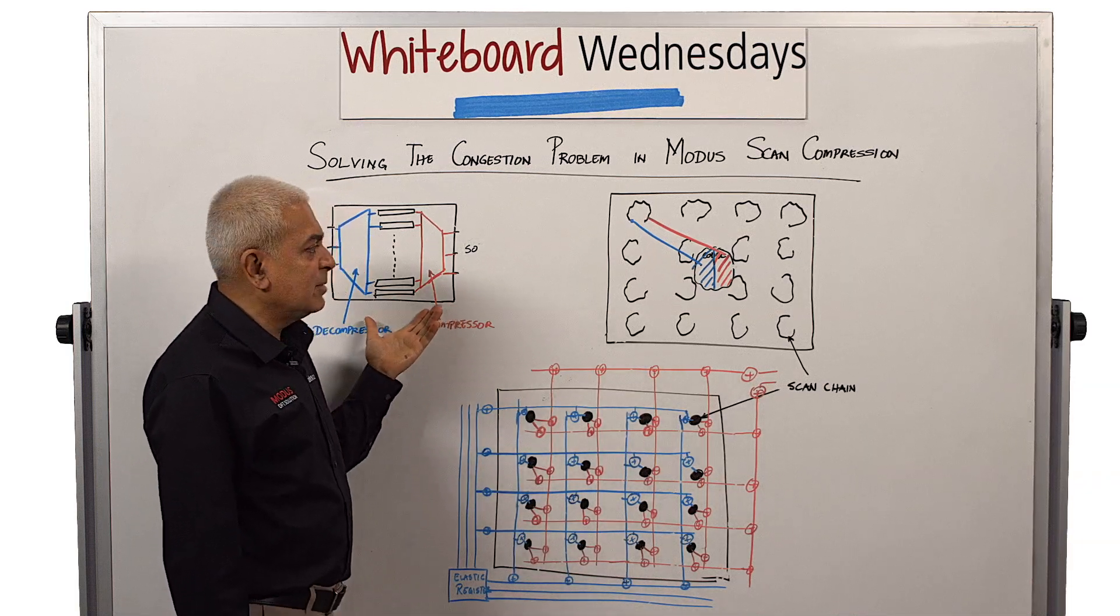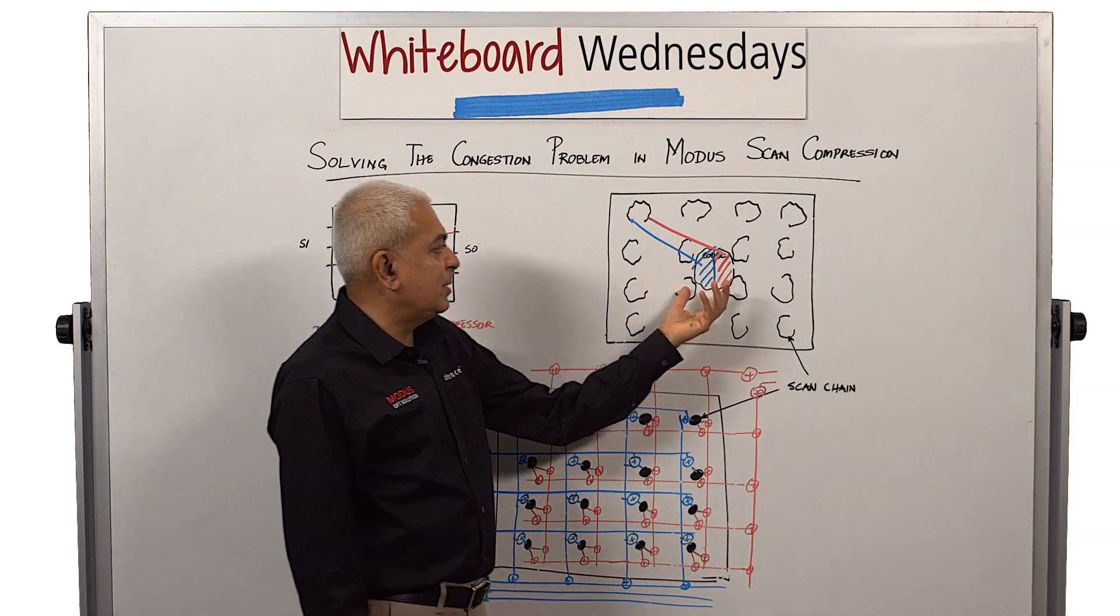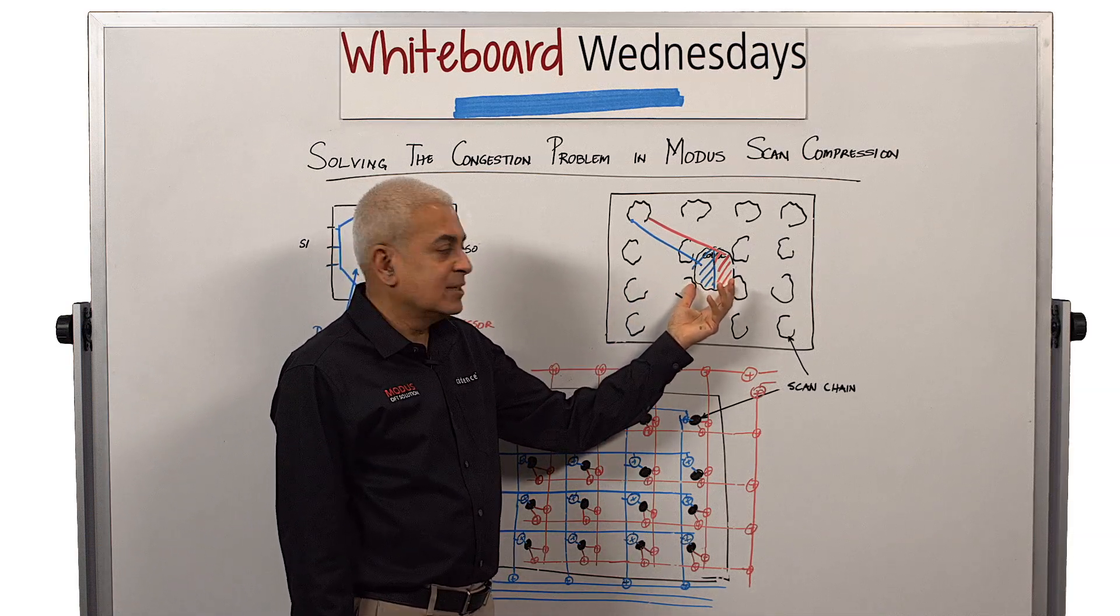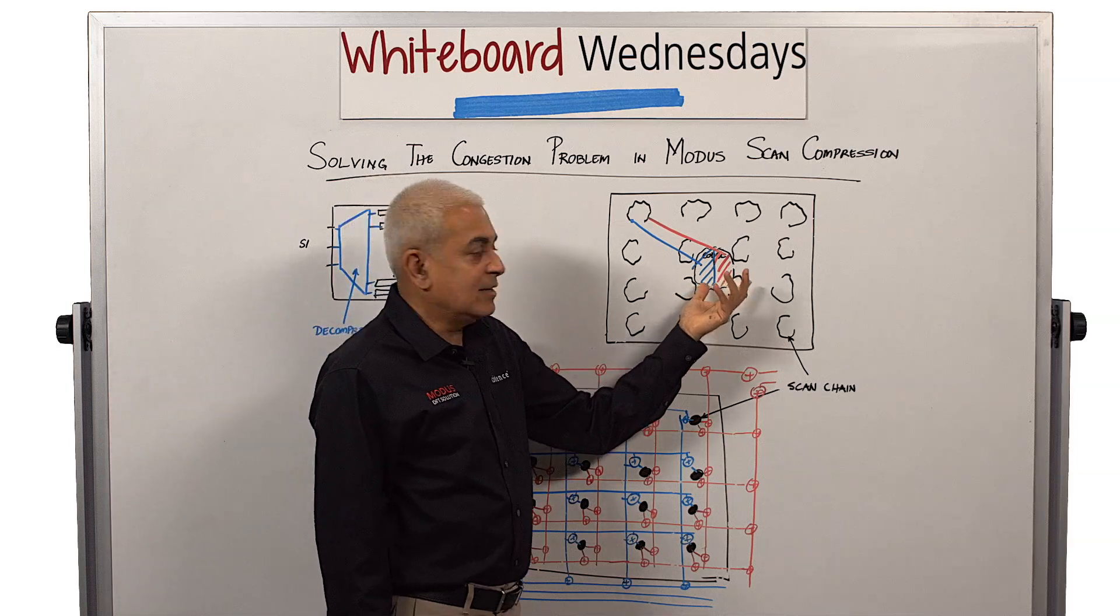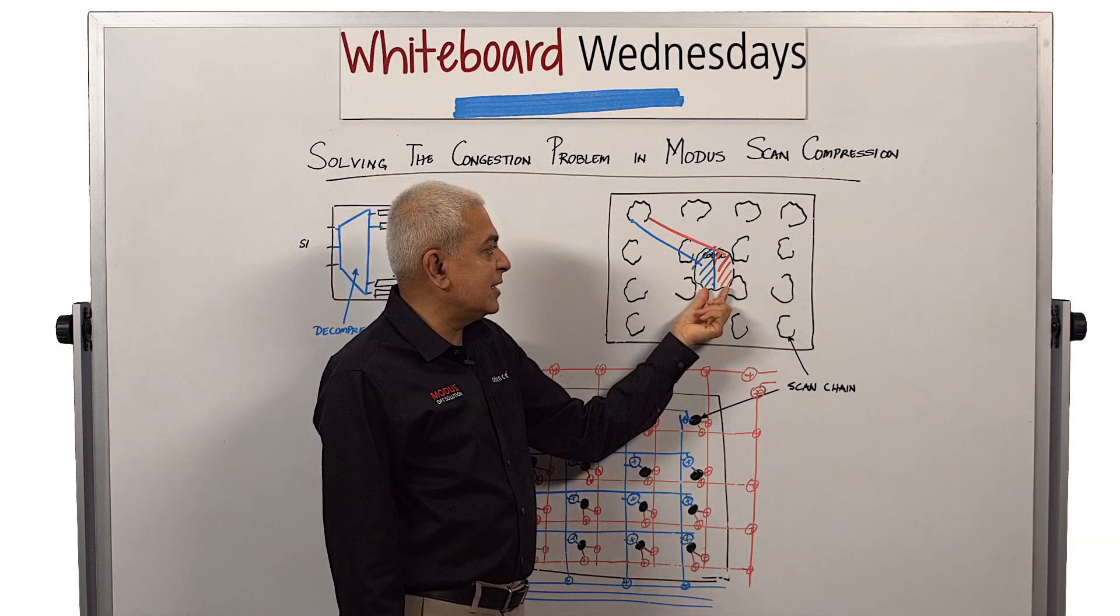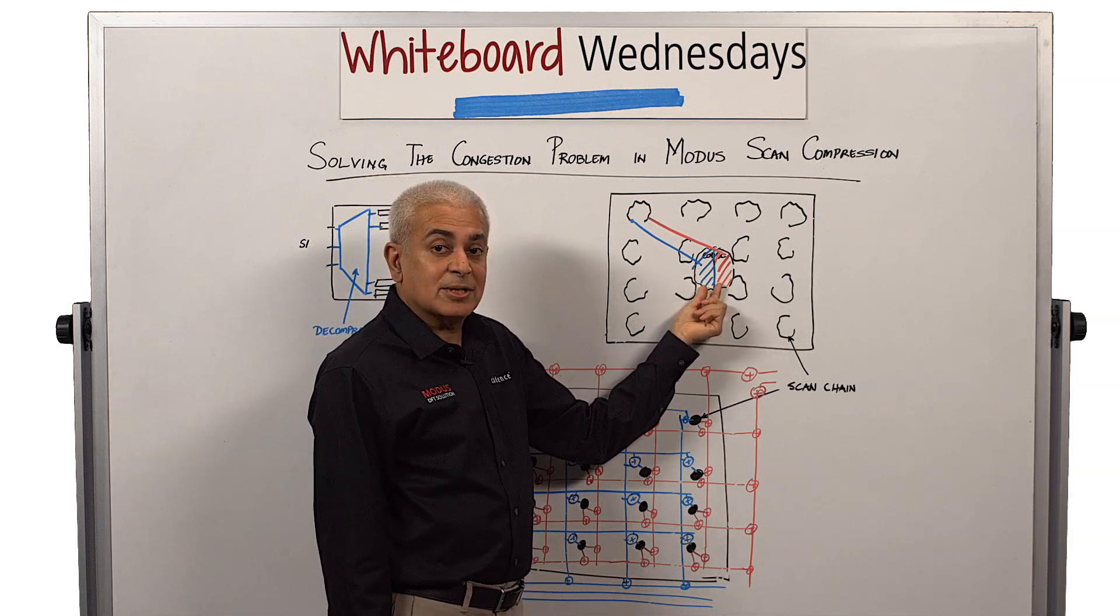In a normal compression implementation, the codec would be placed somewhere on this layout. I took the location in the center for this, and the codec represents the compressor and decompressor together.